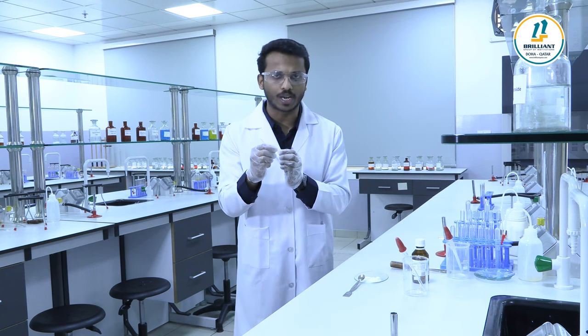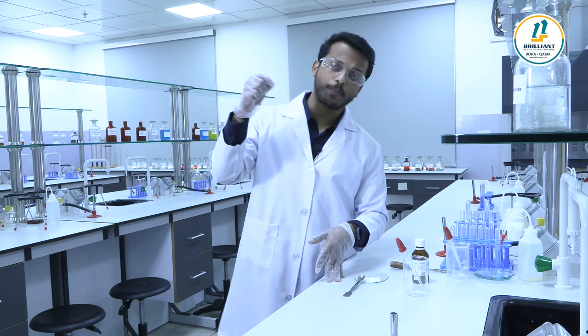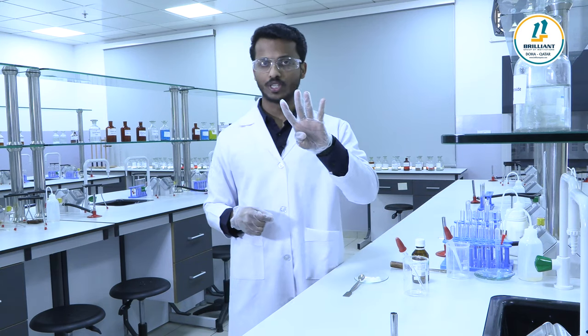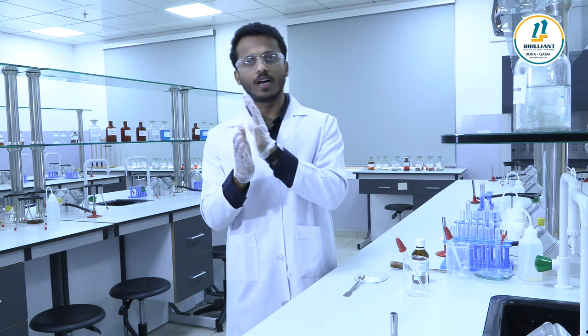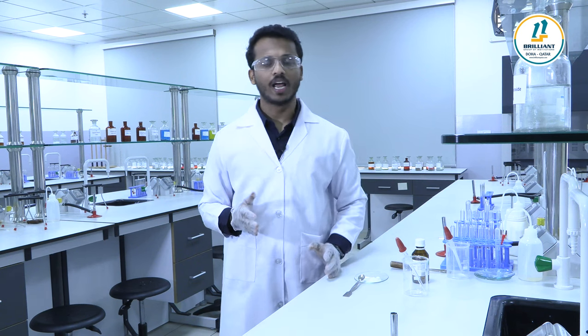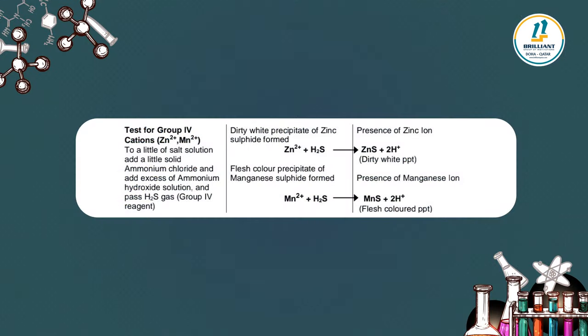Group four cations are zinc and manganese, Zn2+ and Mn2+. To a little of salt solution, add ammonium chloride, ammonium hydroxide, and pass H2S gas — these are the group four reagents. If it is zinc, you get a dirty white precipitate; if it is manganese, you get a flesh-colored precipitate.